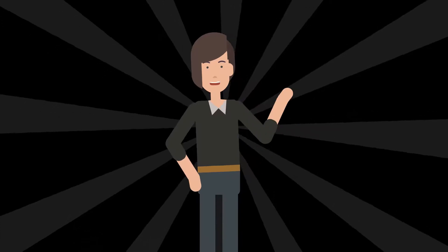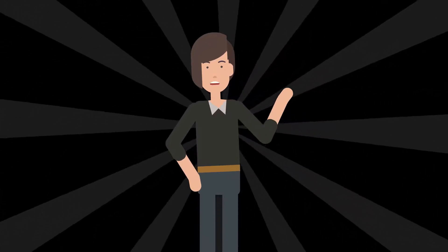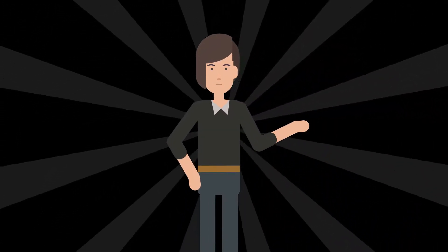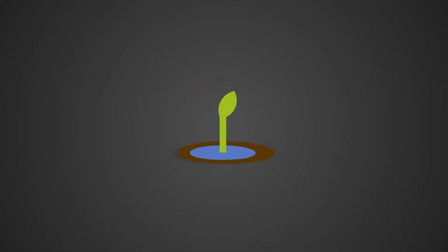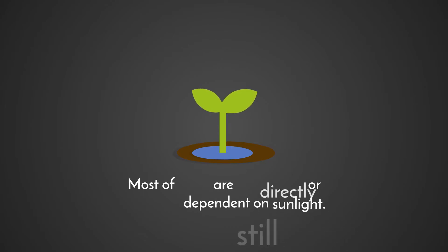What this means is that the plant will grow towards the nearest source of light, however bleak that might be. So while plants can survive for a short period without sunlight, most of them are still directly or indirectly dependent on sunlight.